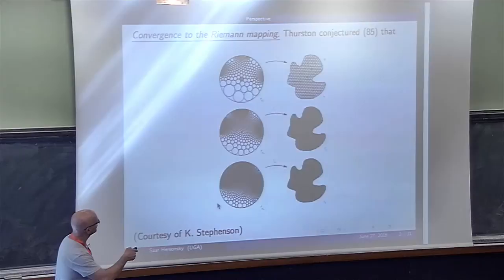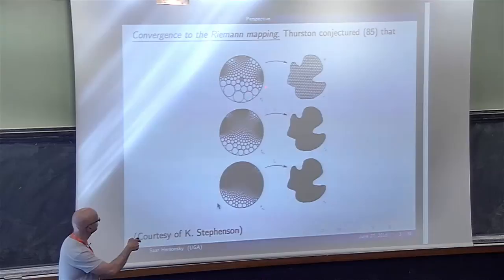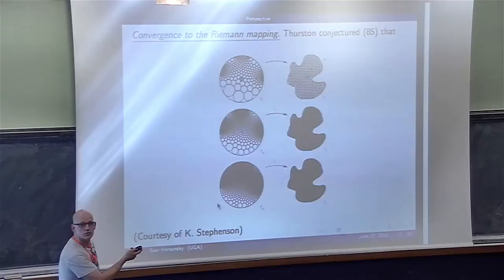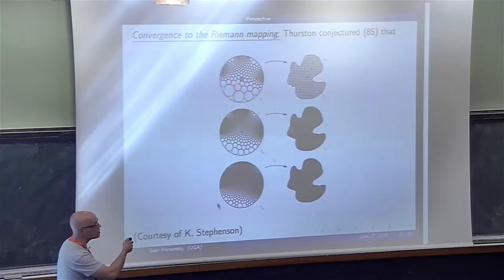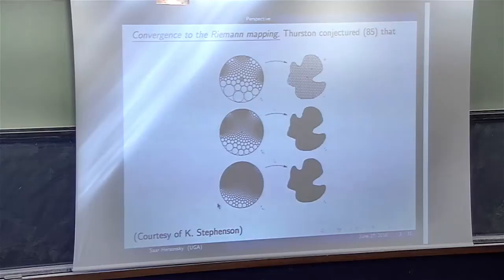The Koebe-Andreev-Thurston theorem tells you the following. The right side has some combinatorics determined by the packing, and the theorem tells you that there is a packing of the unit disk — what you see on the left — by circles which preserve the combinatorics. The radii are not preserved in general, but the combinatorics is. The contact graphs are isomorphic, both induced by graphs where each vertex has exactly six neighbors.